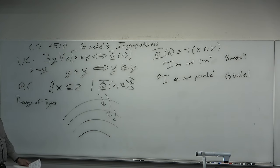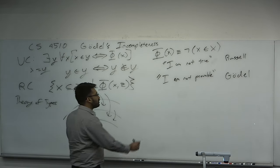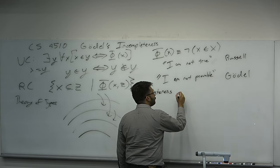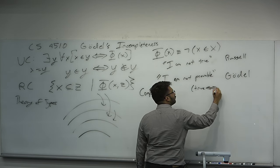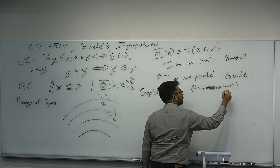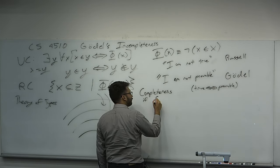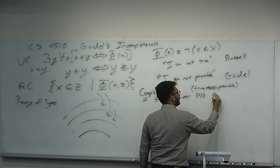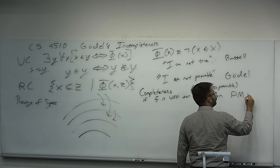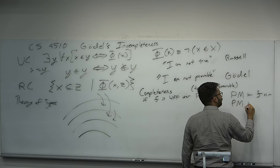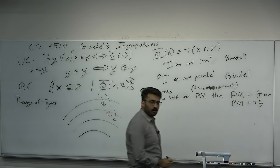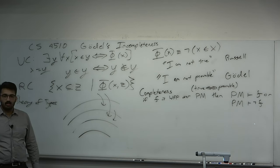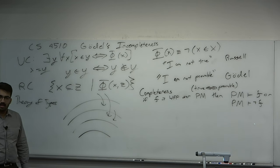Before we get into what those theorems are, let's talk about what we would hope the system to have. The system should have two properties. One is completeness. A system is complete intuitively if all that is true is provable. So if F is a well-formed formula over Principia Mathematica, then there is a proof from Principia Mathematica to F, or a proof to the negation of F.